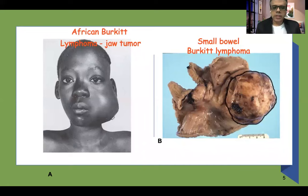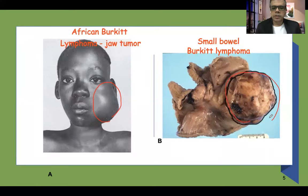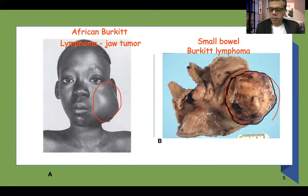The jawbone is commonly involved in African endemic Burkitt lymphoma, while sporadic lymphomas commonly present as an ileocecal mass and can also present as small intestinal obstruction or intussusception. Obstruction is a very common feature of small bowel lymphoma.